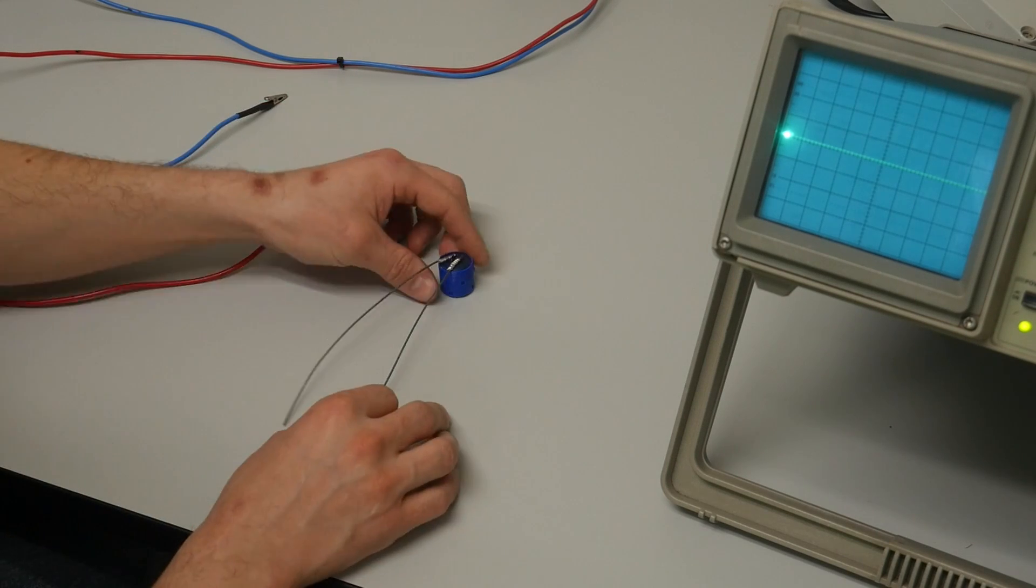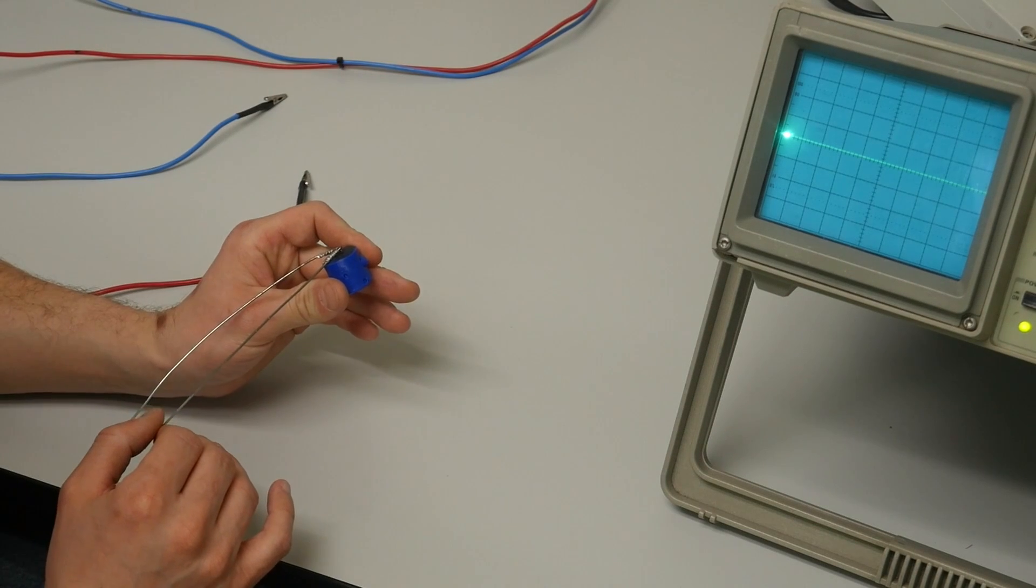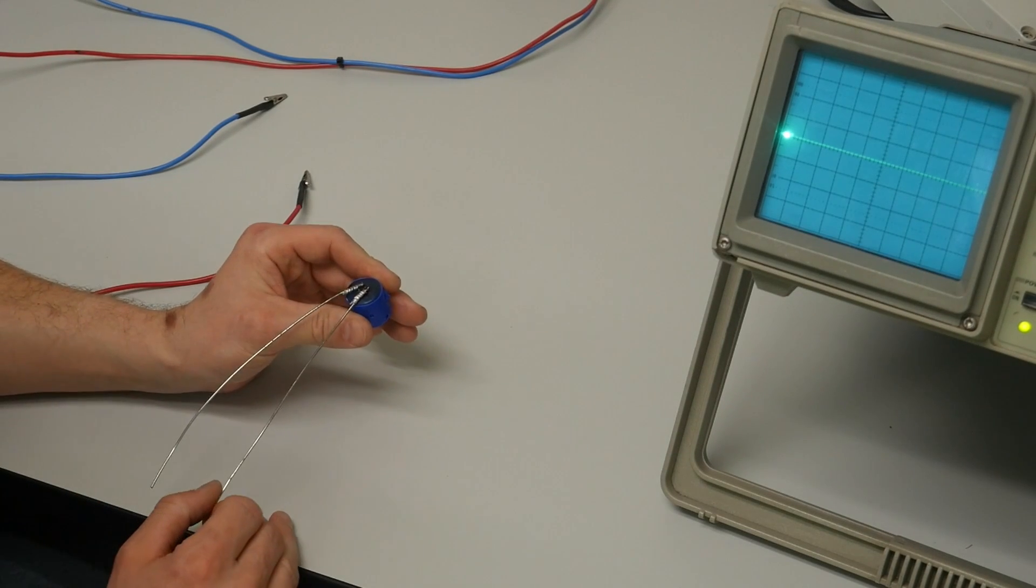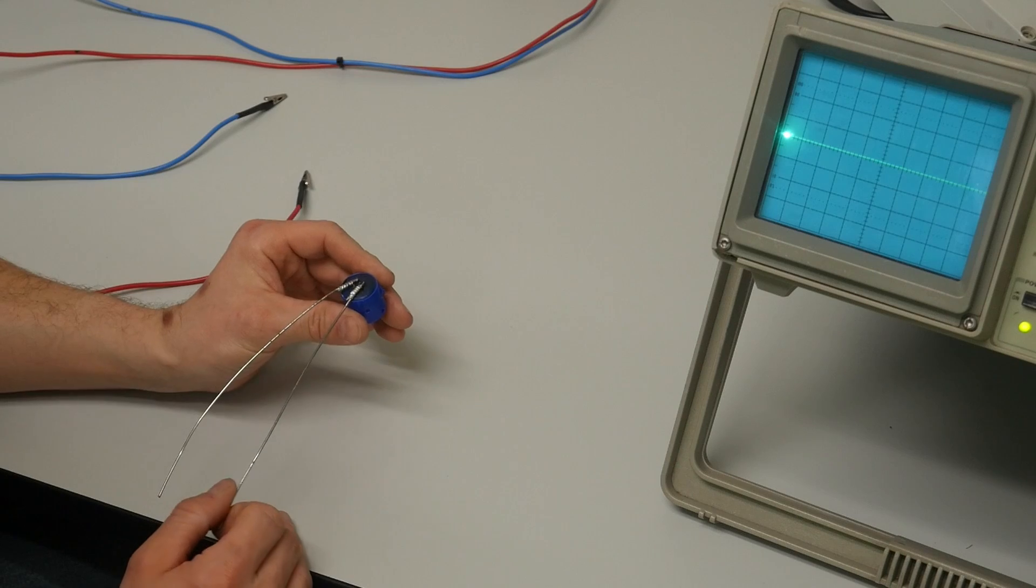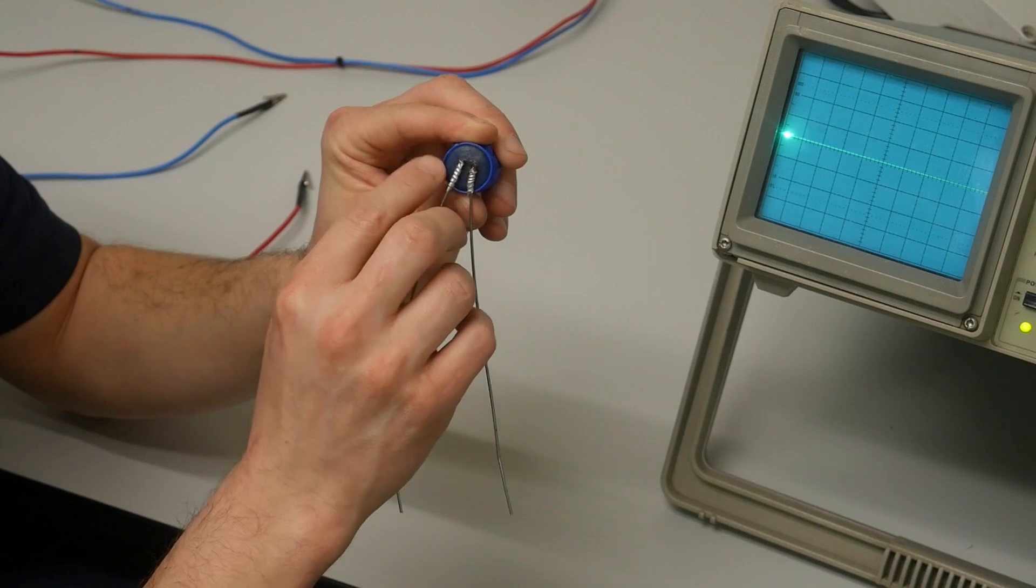Here I have a failed diode package. This one I put too much current through at room temperature and caused it to fail. You can see on this diode package that there is some sooty, sticky residue coming out of the epoxy.